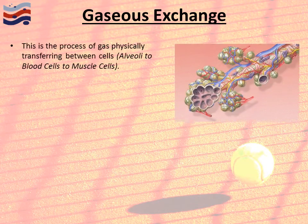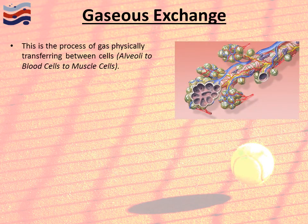Gaseous exchange is the process of gas physically transferring between cells. The image on screen is a cross-section of the millions of alveoli located in the lungs — small air sacs. As you can see, those alveoli are surrounded by small blood vessels known as capillaries, which we've discussed previously when looking at the cardiovascular system.